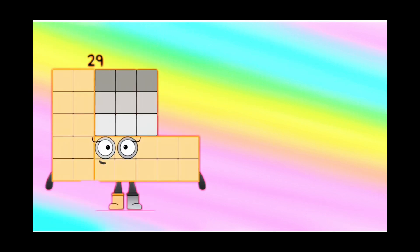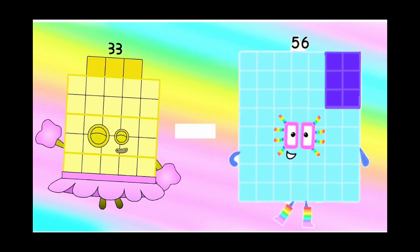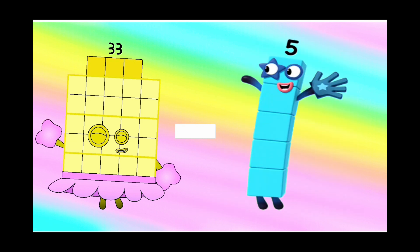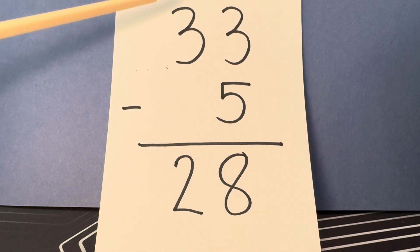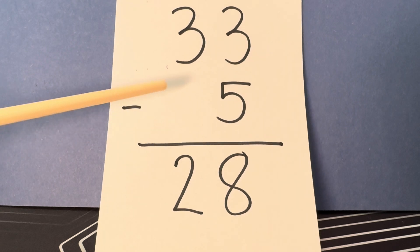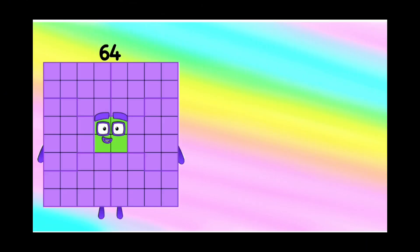33 minus 5 is equals to 28. And again, 33 minus 5 is equals to 28.